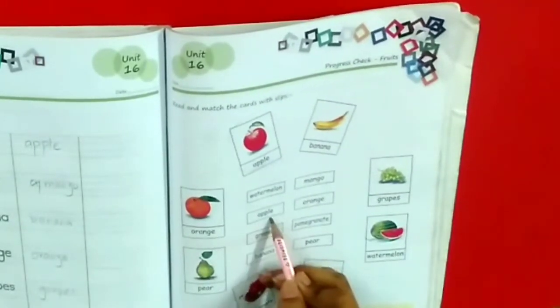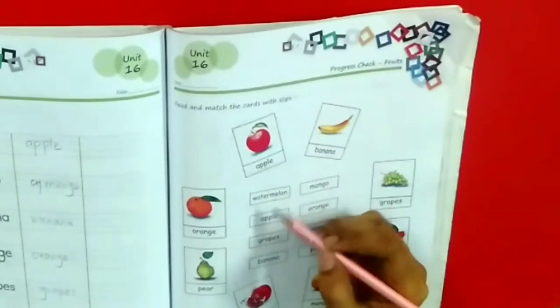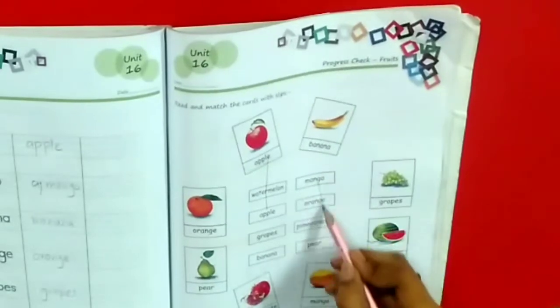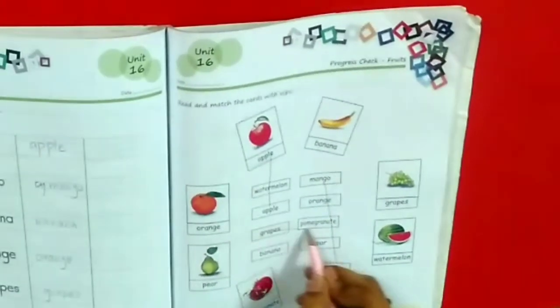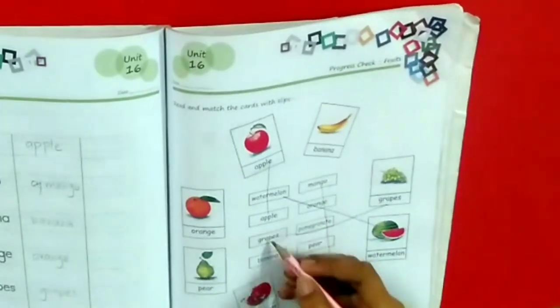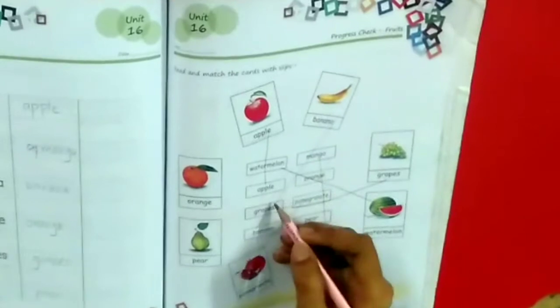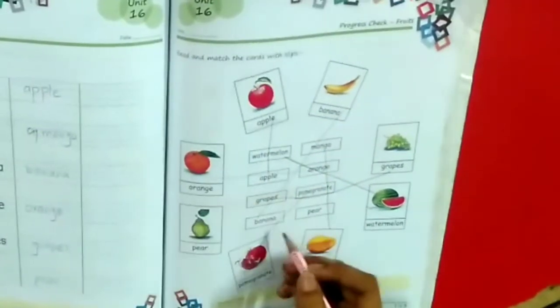Like apple, A-P-P-L-E, apple. So we have to write the apple and match them. Apple, mango, grapes, watermelon, pomegranate, banana, orange, pear.